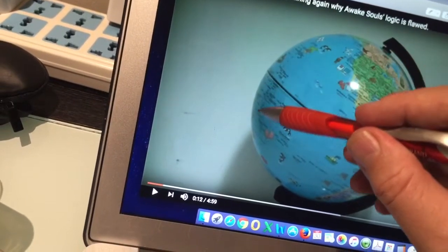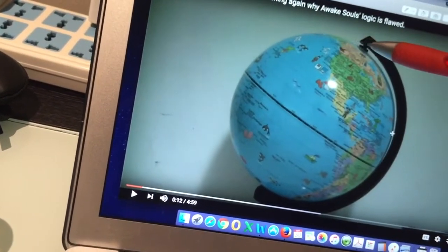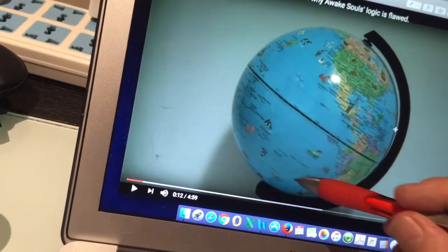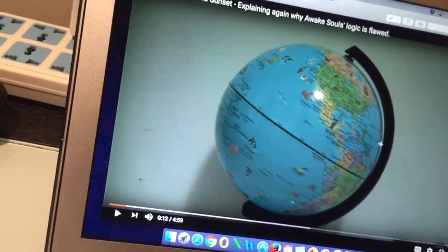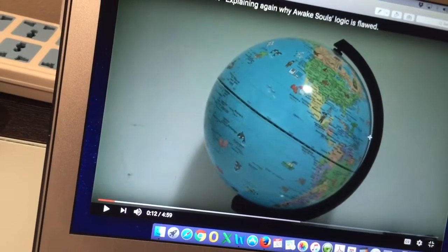and right at that point, right at the perimeter of the globe, that's where the Terminator is. Everything that we can see is in daylight. Everything we can't see is in the night time.